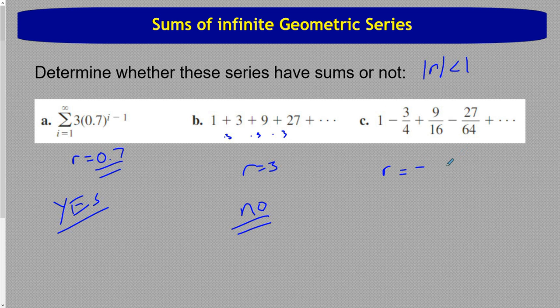To go from one to three-fourths, we are multiplying by three-fourths. And if I do that again, three times three is nine, and four times four is sixteen. Nine times three is twenty-seven. Sixteen times four is sixty-four. So this is our r value. The absolute value of r is three-fourths, which is less than one. So this is also yes.